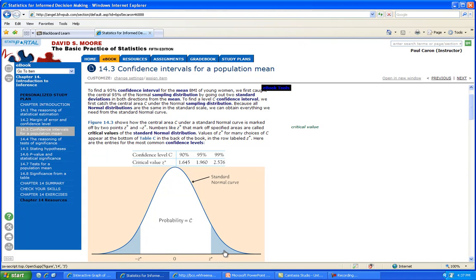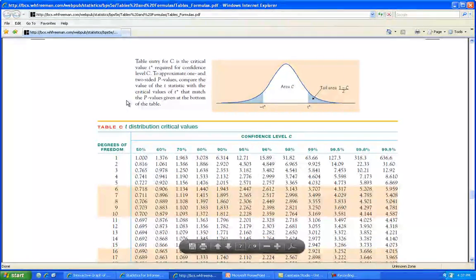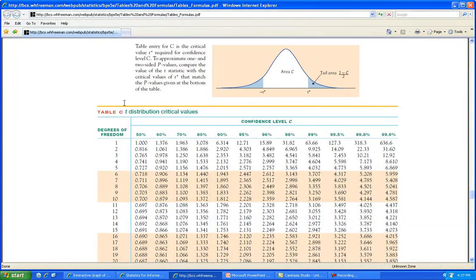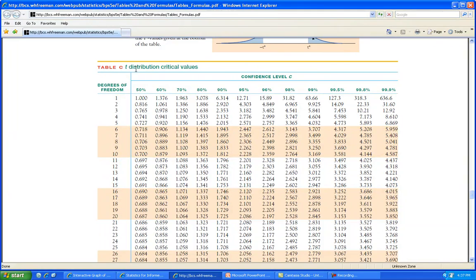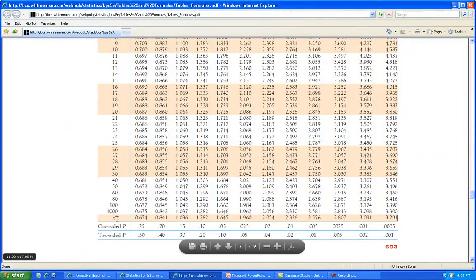The values of z-star from any choice of C appear at the bottom of Table C in the back of the book. If you go to the back of the book and find Table C, you go all the way down past the t-distribution to the z. Here's the z-star right here.